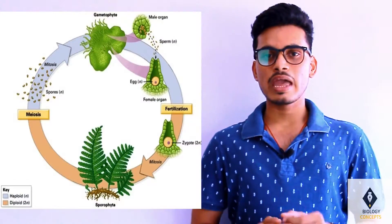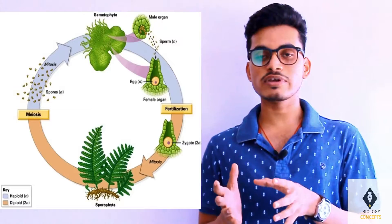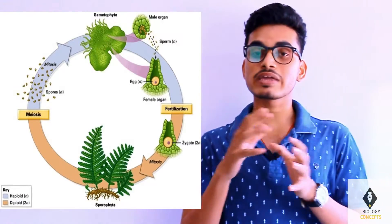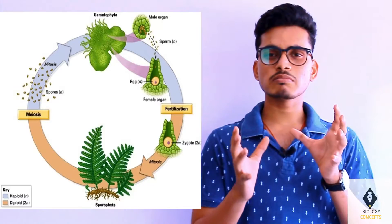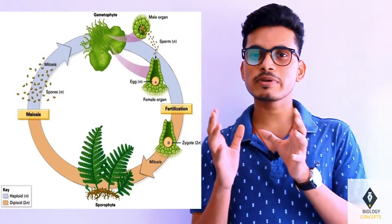Apogamy is a phenomenon by which there is development of a sporophyte from the gametophyte. The chromosome number between the sporophyte and the gametophyte is basically the same. Importantly, there is no involvement of sex organs or fertilization in the process of formation of the sporophyte from the gametophyte. Apogamy is a natural process but can also be induced experimentally.